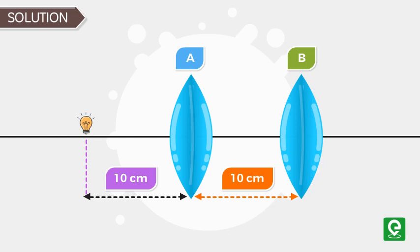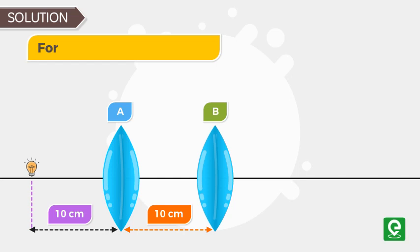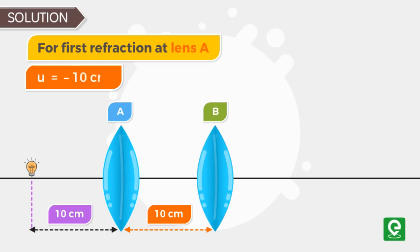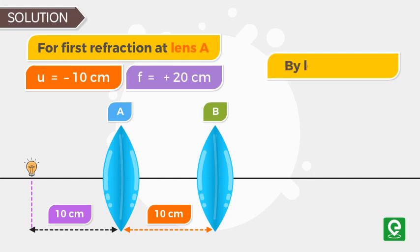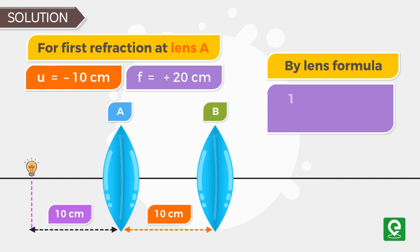We are required to find the position of final image which is formed after two successive refractions from these two lenses. For first refraction at lens A, position of object U is equal to minus 10 centimeter and focal length of A is plus 20 centimeter because it is a converging lens. Then by lens formula we can write 1 by V minus 1 by U is equal to 1 by F.